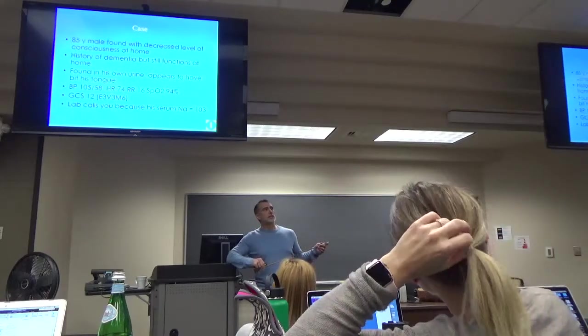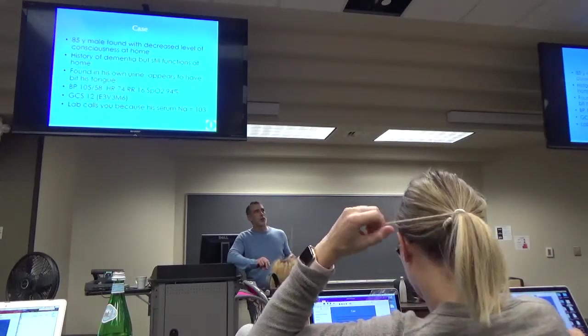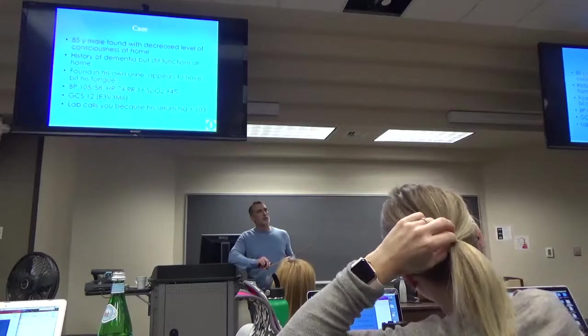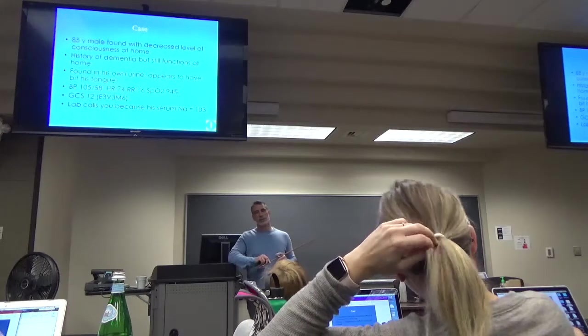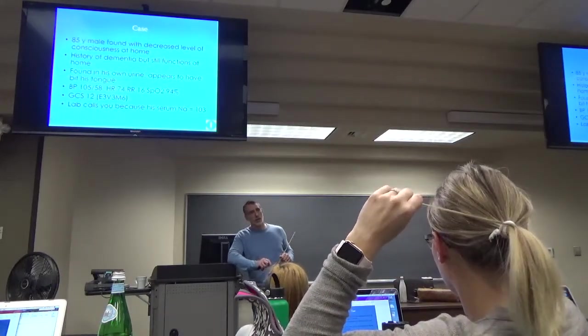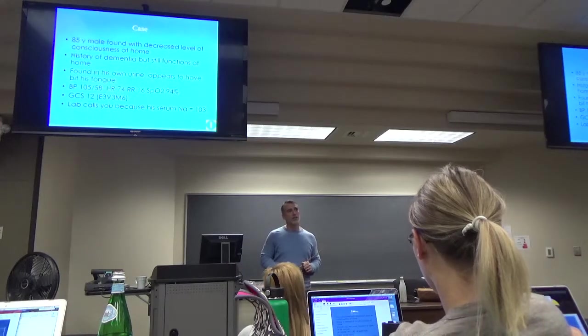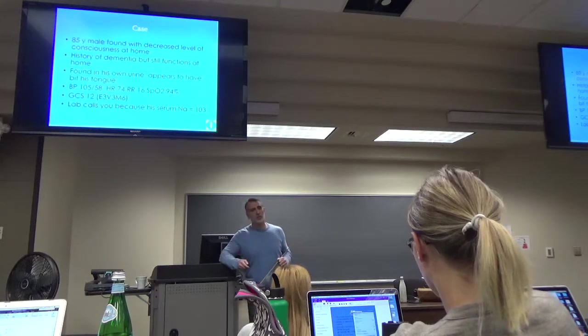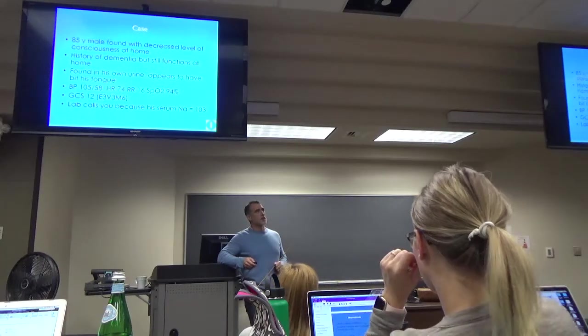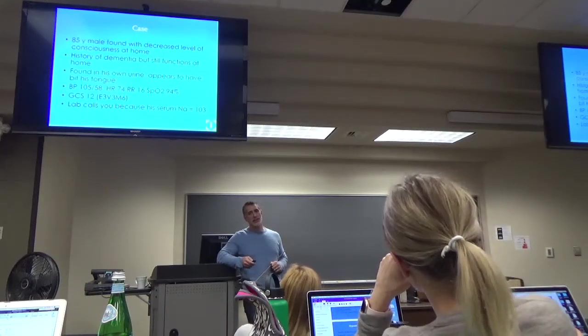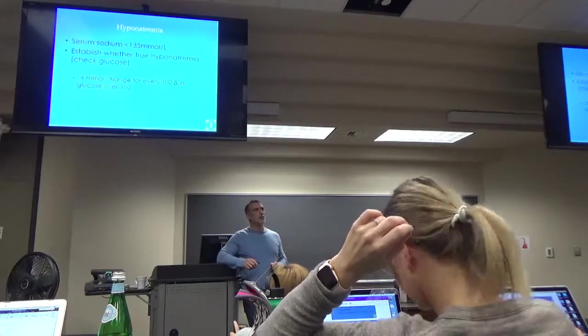So, this would be a typical patient that we see, 85-year-old male, decreased level of consciousness at home, history of dementia, still takes care of himself pretty well, found in urine, appears to have bitten his tongue, you can see the vital signs there, his GCS, lab calls, and he's got a serum sodium of 113. So, this would be something that we see relatively commonly. So, older patients, they're on tons of medicines, particularly in the summertime, they don't like those electric bills, so sometimes they let their houses get too hot, and they come in altered. They've got a history of dementia, and now I'm trying to figure out is this new different, or is this kind of how different they are with us? But it obviously helps when lab calls you a sodium like that.